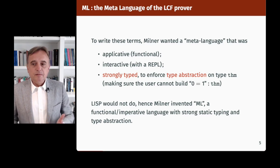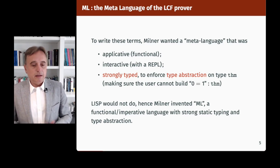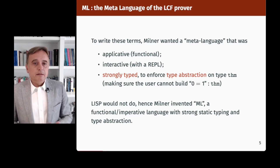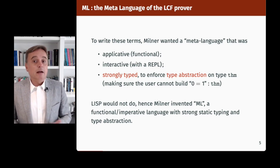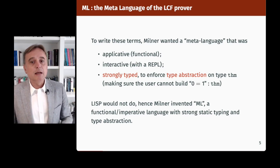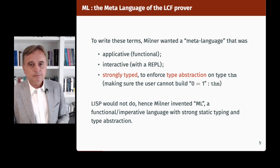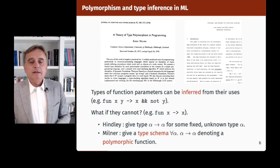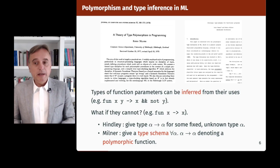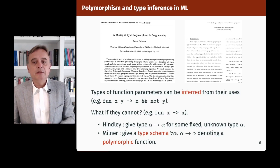The user must not be able to claim that '0 equals 1' is a theorem. So of course Milner was using Lisp, like everyone in artificial intelligence and theorem proving at that time. But Lisp would not do, because it doesn't let you define abstract types. Hence, Milner invented ML, a functional and imperative language with strong static typing and type abstraction.